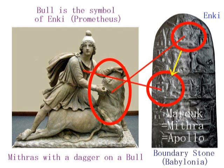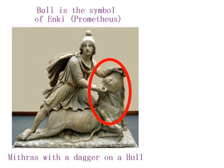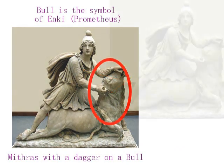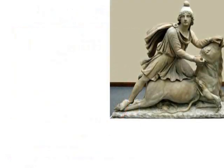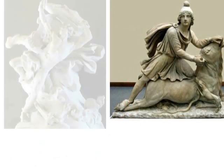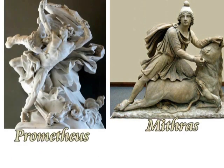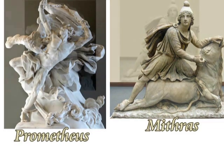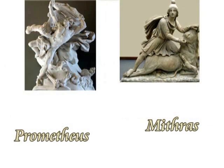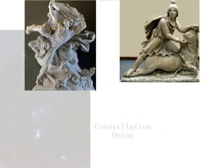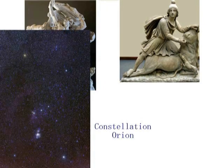そして、その牛をミトラが短剣で突き刺している。ミトラ＝マルドゥック説、バイ、林博史です。ここで、ミトラ像と先に紹介しましたプロメテウス像を並べてみると、大変興味深いことがわかります。左下はオリオン座です。